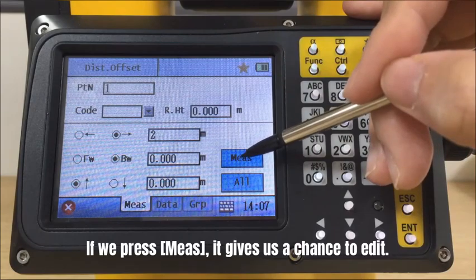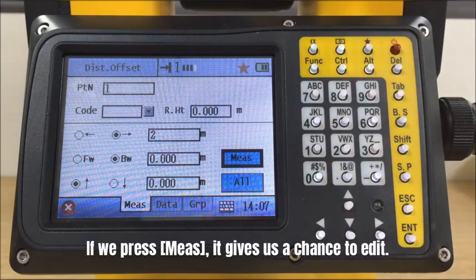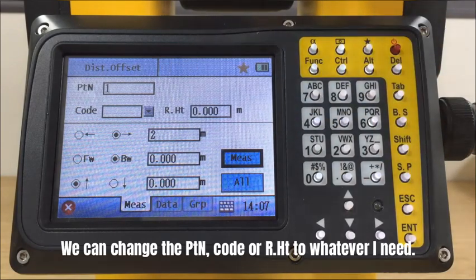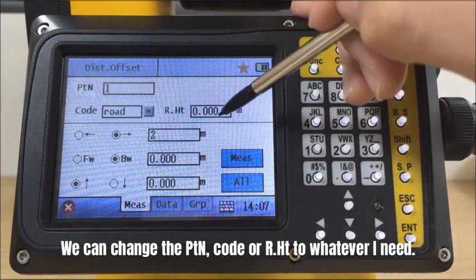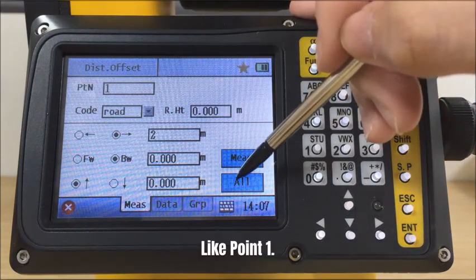If we press measure, it gives us a chance to edit. We can change the point name, code, or target height to whatever I need. Like, point 1.